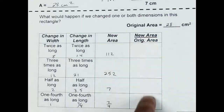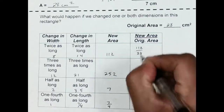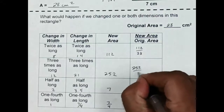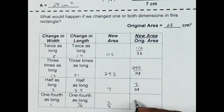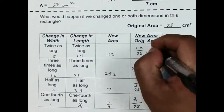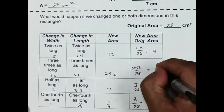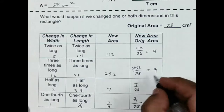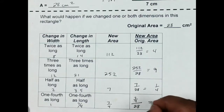I want to compare the new area to the original. So this is going to be 112 over 28, 252 over 28, 7 over 28, and then 7 fourths over 28. Reducing all of these gives me 4, then 252 over 28 is 9, this reduces to 1 fourth, and this comes out to 1 sixteenth.